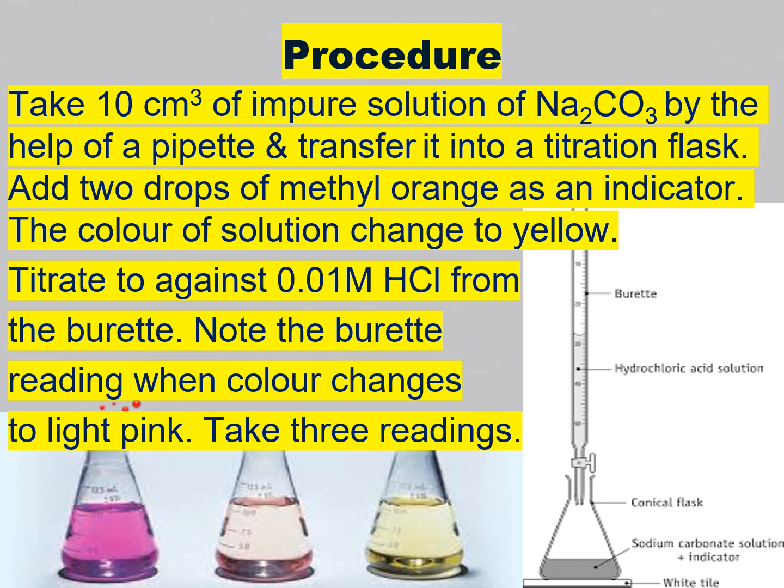Procedure: take 10 cm³ of impure solution of sodium carbonate by the help of a pipette and transfer it into a titration flask. Add 2 drops of methyl orange as an indicator — the color of the solution changes to yellow. Titrate against 0.1 molar HCl from the burette. Note the burette reading when the color changes to light pink. Take 3 readings.